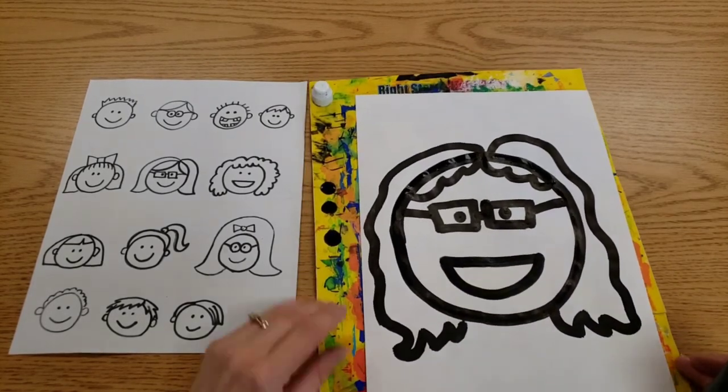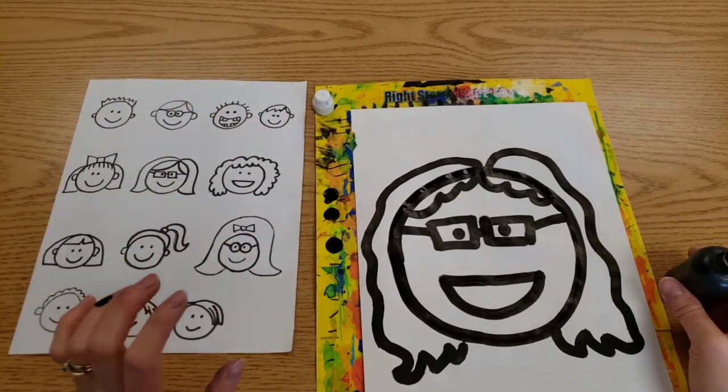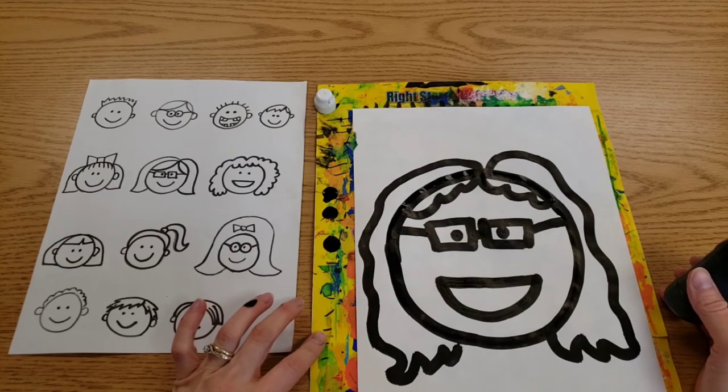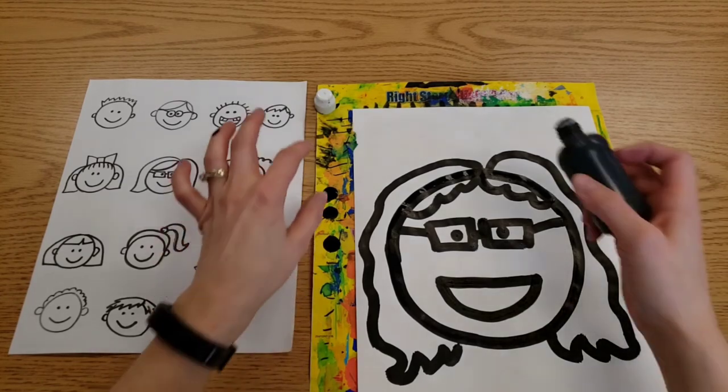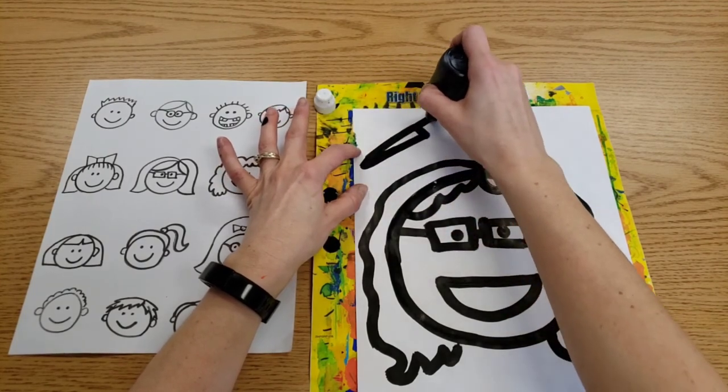And in the extra space, you can add one thing that tells me something about you. Like I am an art teacher. I like art. So up here, I'm going to add a paintbrush.